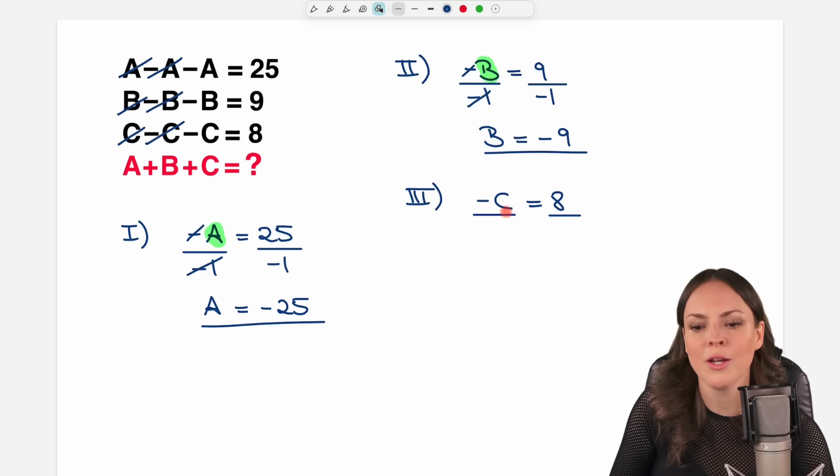So by dividing both sides of the equation by negative 1 again, we can find our C here as well, which is going to be negative 8.